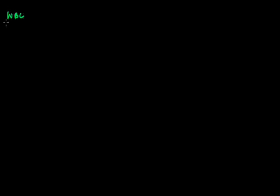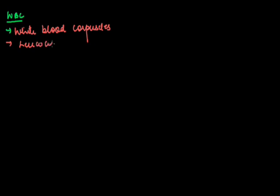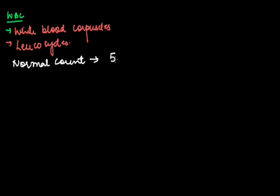Hello students, we will discuss about WBC. WBC is also regarded as white blood corpuscles, or they are also called as leukocytes. The normal count of WBC is around 5000 to 11000 per millimetre cube of blood.